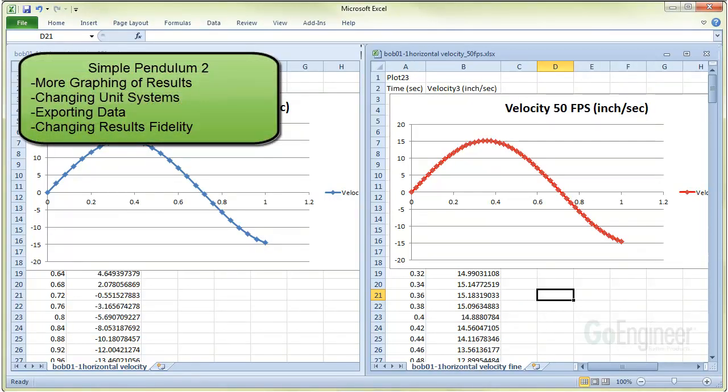In this second part tutorial of SOLIDWORKS Motion, we showed graphing of results, changing unit systems, exporting data, and changing the result fidelity. This is Tony Bodding at GoEngineer and we hope you enjoyed watching the series.